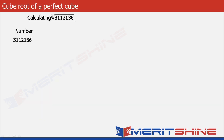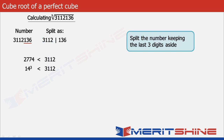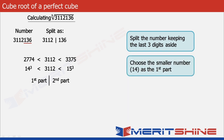Let us now take 3112136 as an example. The first step would be to split the number keeping the last three digits aside. So we'll get 3112 in the first part and 136 in the second. We observe that 3112 lies between 2744 which is 14 cubed and 3375 which is 15 cubed. The answer would be in two parts, and the first part gives 14.